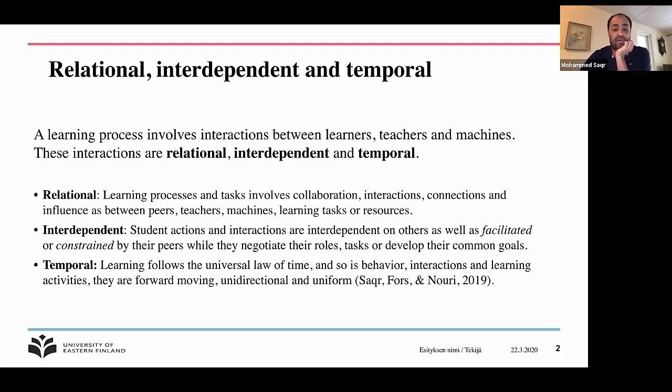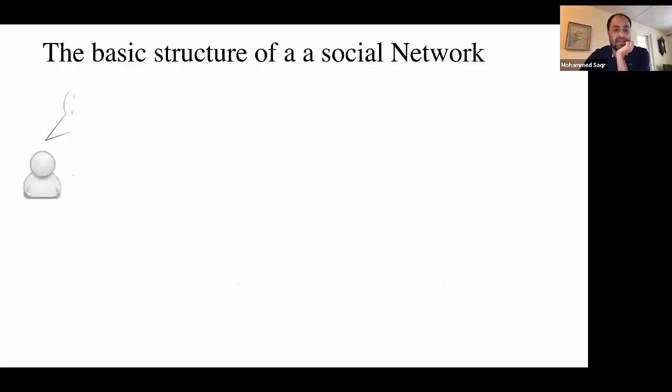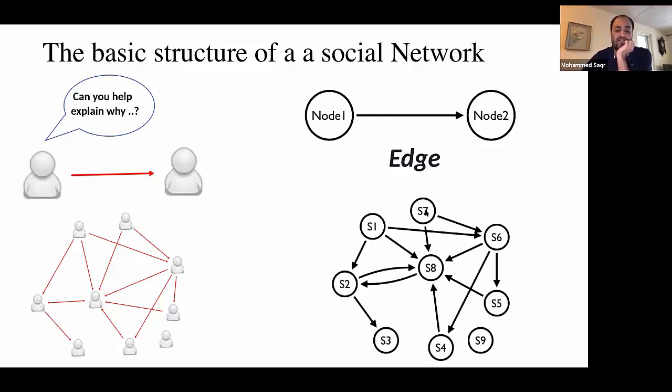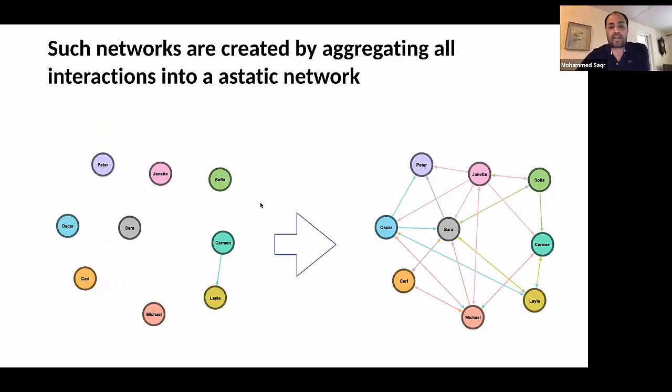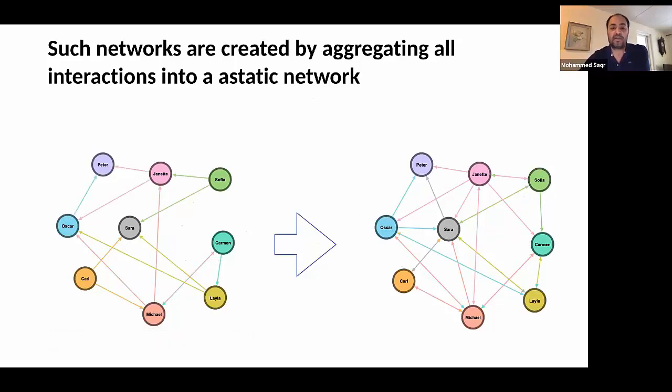These interactions unfold in time and have long been represented as compiled or aggregate networks. I will explain what is that. For example, if somebody says to another person 'can you help explain why,' we can represent that as an edge, or what we call an edge, from the speaker to the receiver. An aggregate network is a compilation of all these interactions between these two people, and we draw them nicely in a sociogram. In the video, this is what we actually do: we compile all the interactions until we reach the aggregate network on the right side.